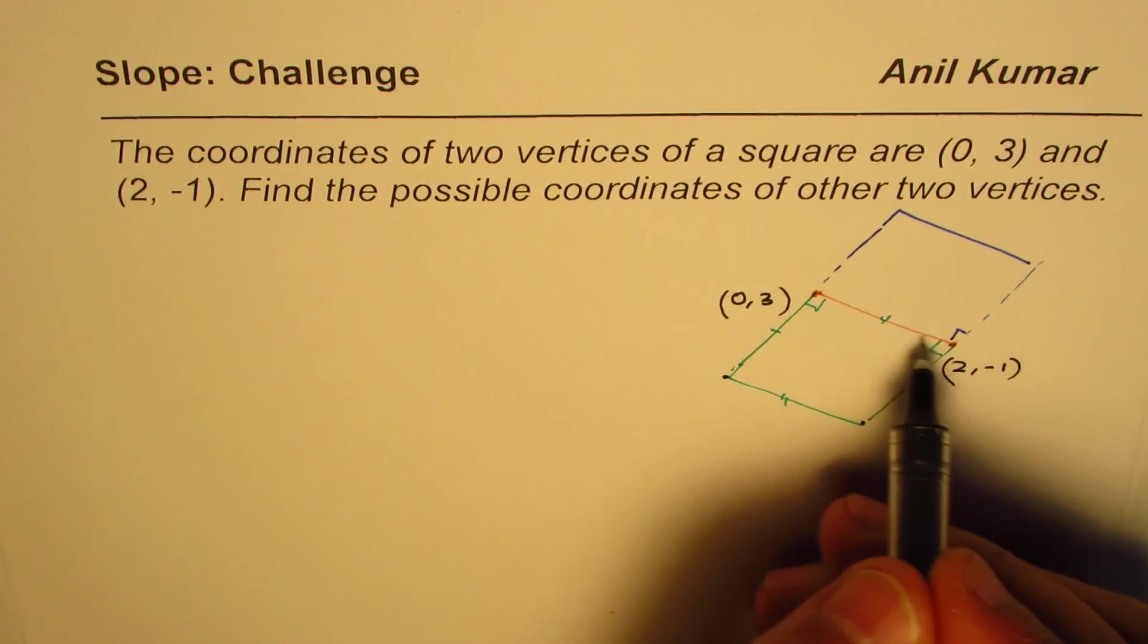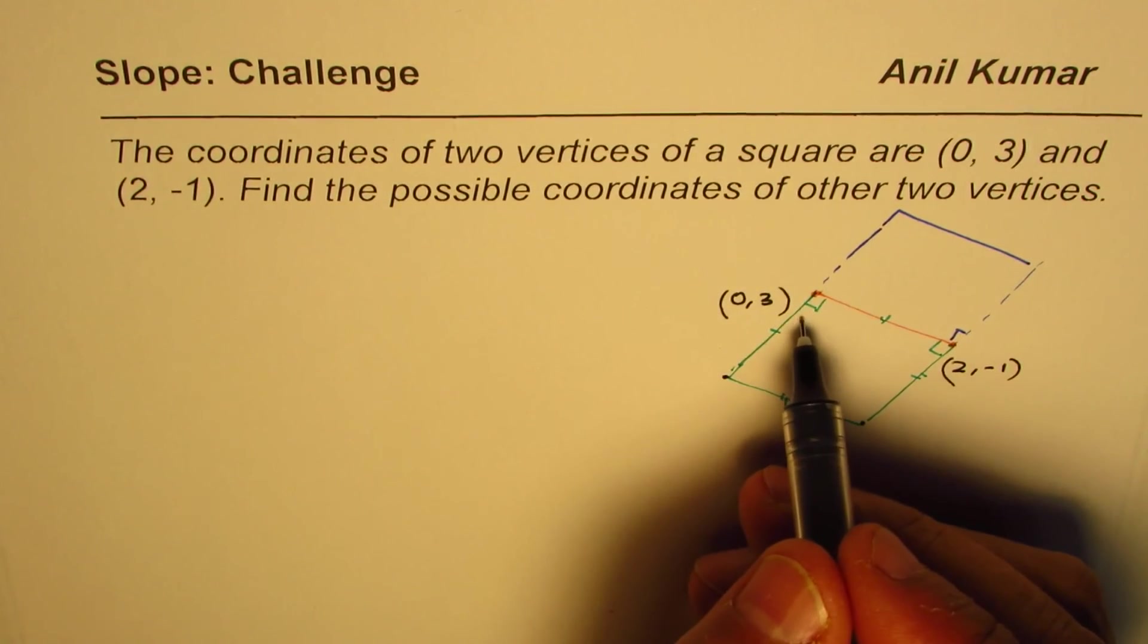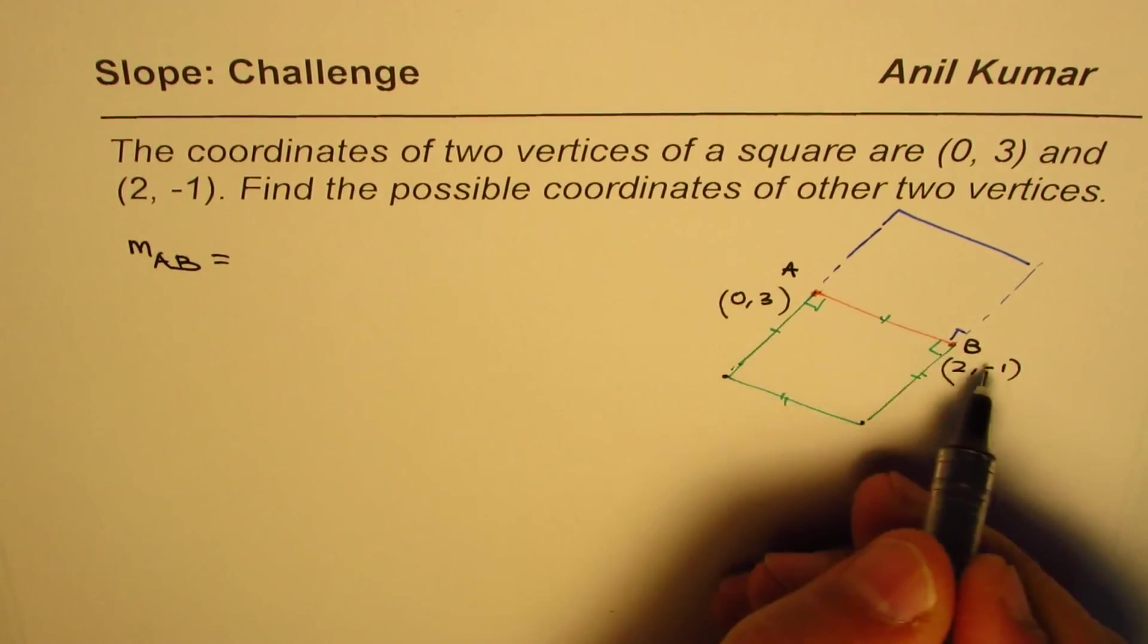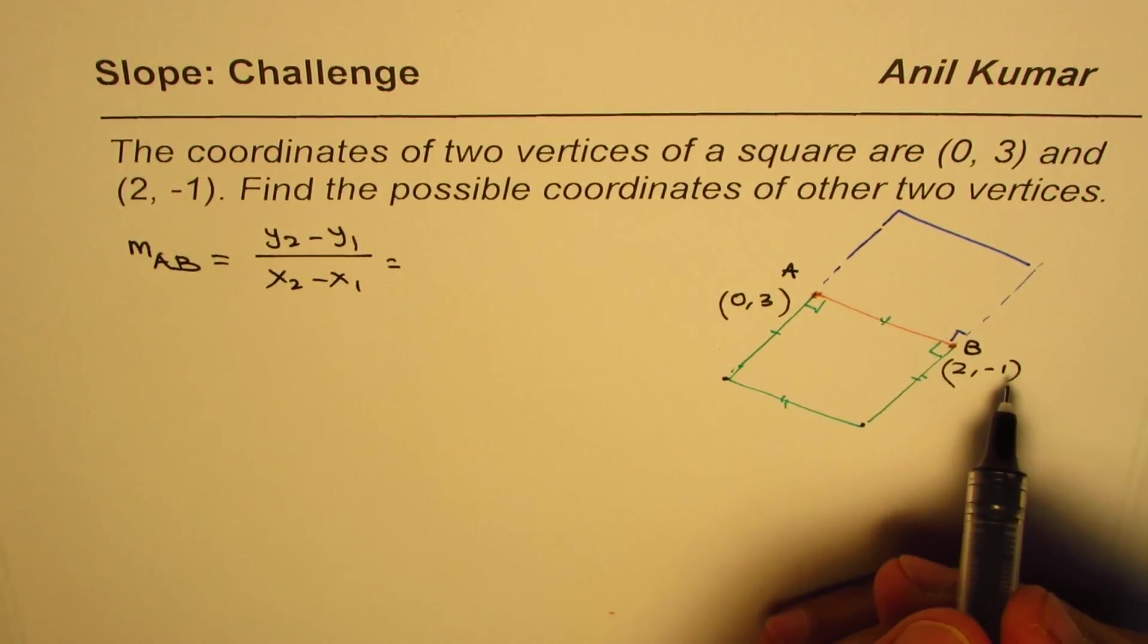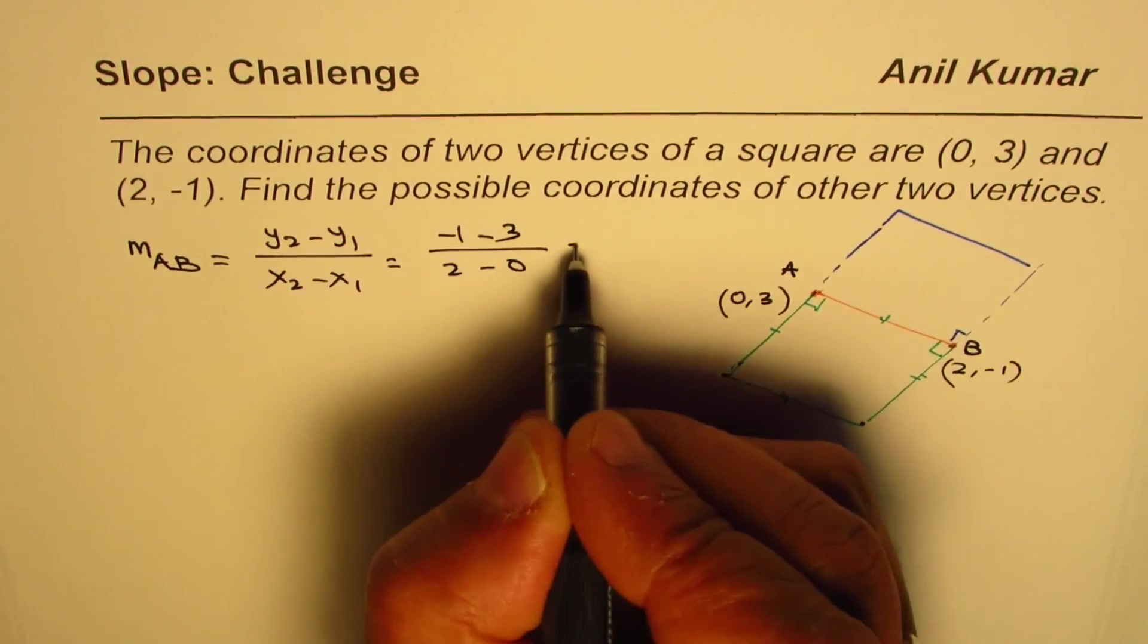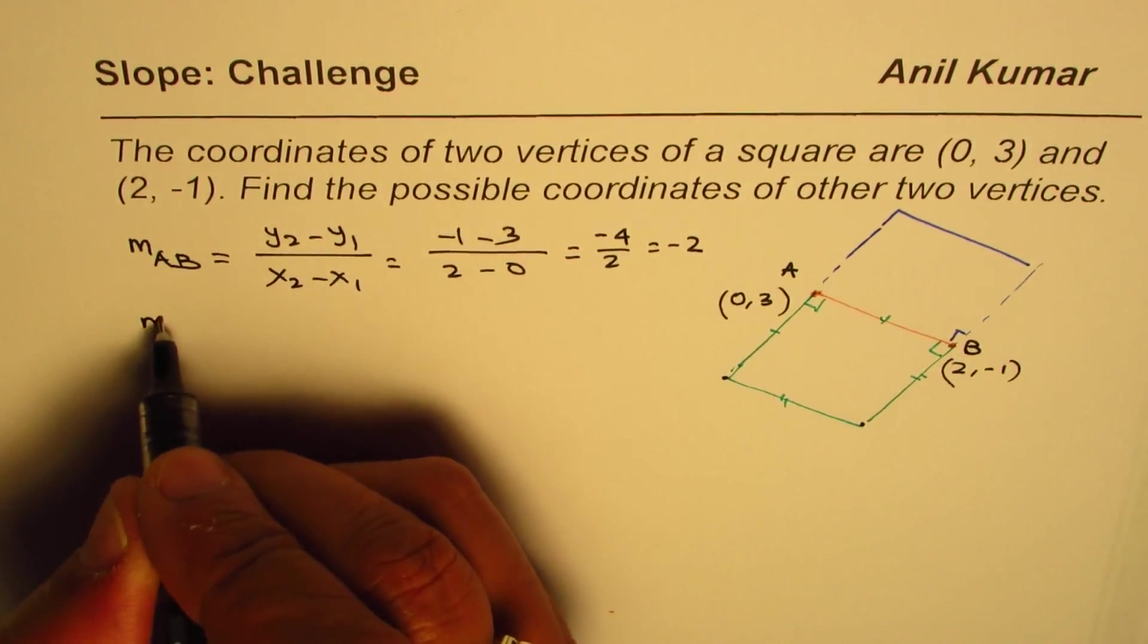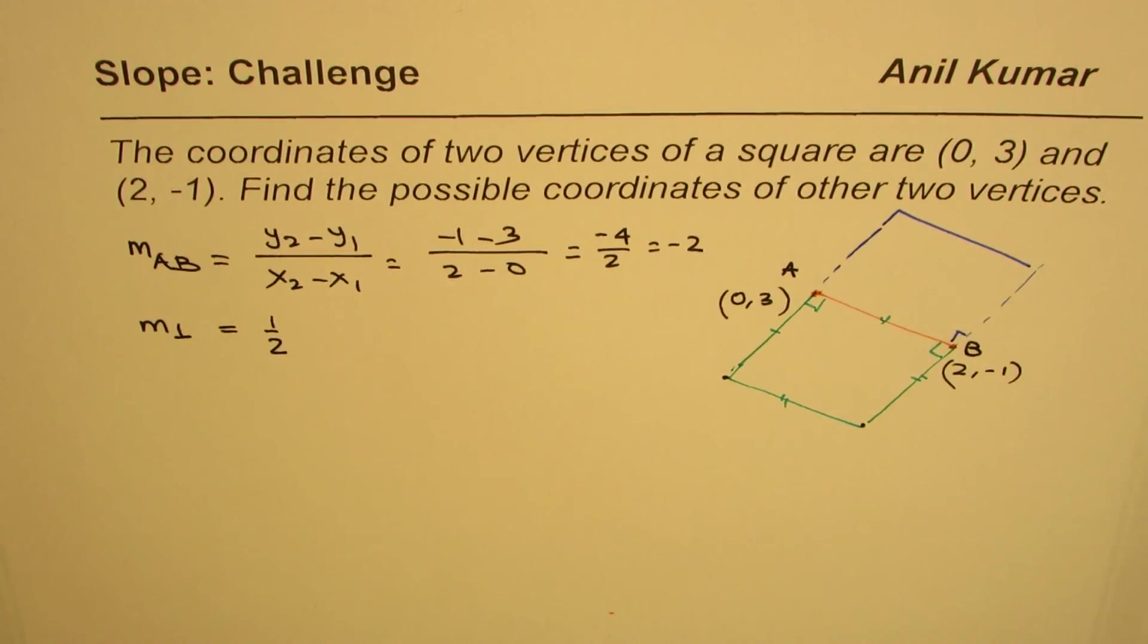Since we are working with perpendicular sides, the slopes are related—their product should be negative 1. Let me call these points A and B. The slope of AB is (y₂ - y₁)/(x₂ - x₁) = (-1 - 3)/(2 - 0) = -4/2 = -2. A line perpendicular to this will have the negative reciprocal slope, which is 1/2.